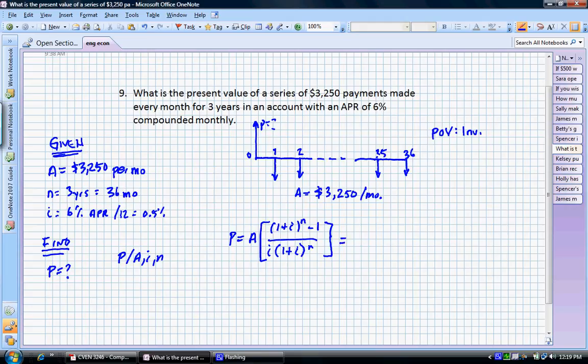Let's add those values in and solve. So our A is $3,250 multiplied by 1 plus our half a percent, which is 0.06, which we'll just put over 12. We're going to raise this to the 36.